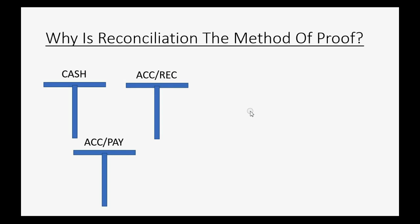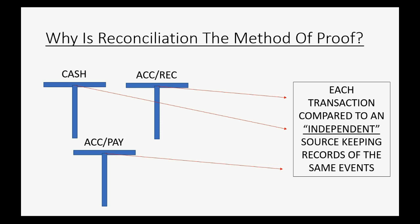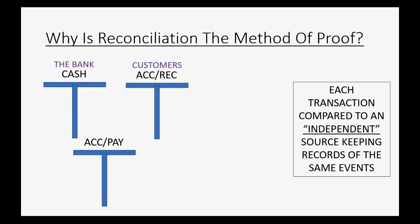Now, you may well ask: why is reconciliation the method of proof that we use to prove these accounts are correct? That's because each transaction recorded in these accounts is compared to an independent source keeping records of the same events. In the case of the cash account, the bank is the independent source. In the case of accounts receivable, customers are the independent source. And in the case of accounts payable, vendors are the independent source — and it is in their best interest that they also keep accurate records. Therefore, if they agree with us, then our records must be correct.